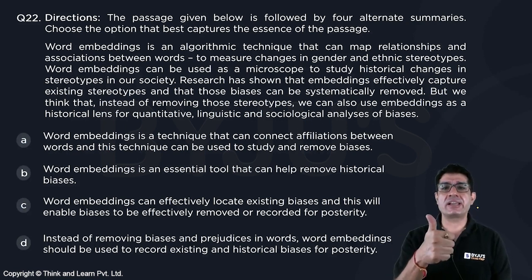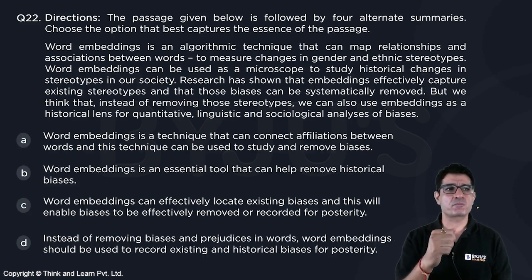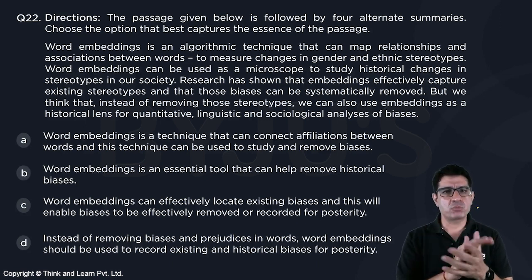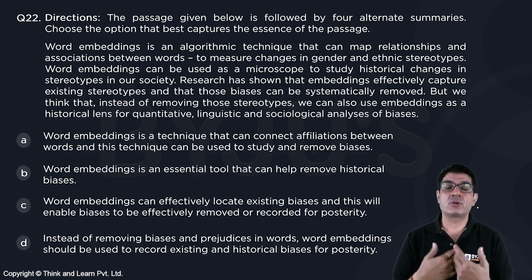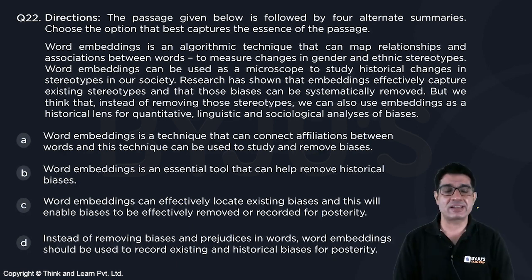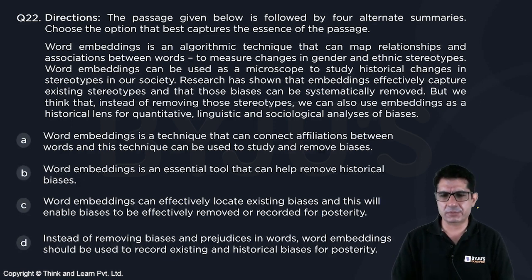First, word embeddings show gender and ethnic biases through history. Second, you can study and remove them. Third, instead of removing them, you can use them to analyze the history of the biases. These are basically the three things that we have.